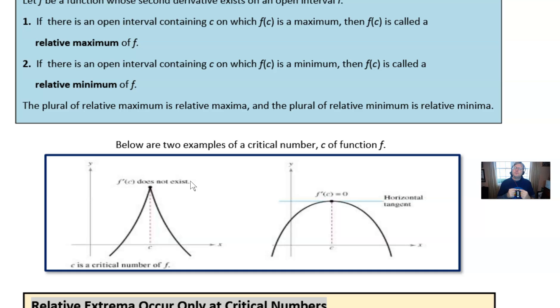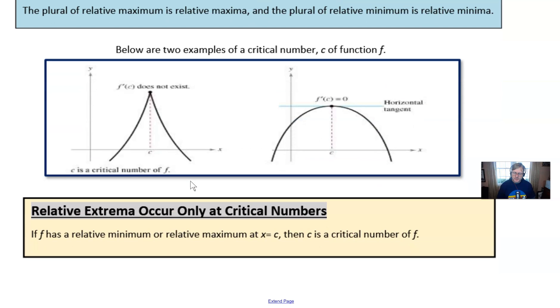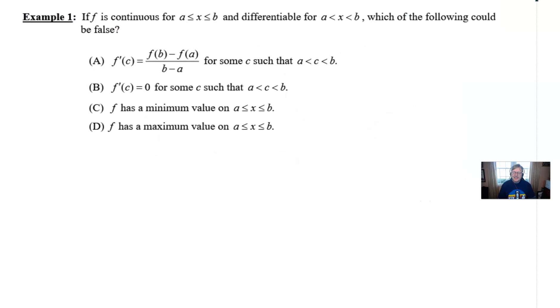However, in order to be a maximum or minimum you must first be a critical number and that's what this little definition states. If f has a relative minimum or a relative maximum then c has to be a critical number if that maximum occurs at c. I know a lot of preliminary information going on.